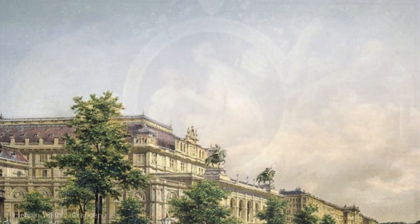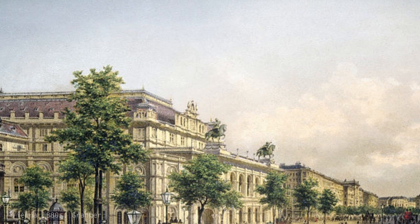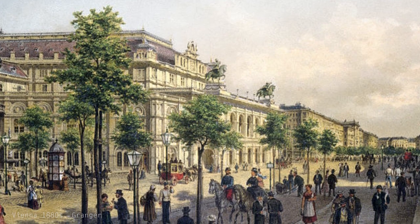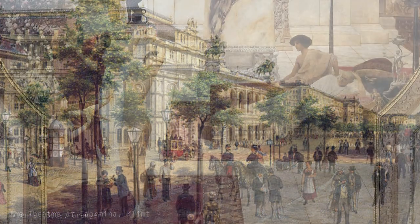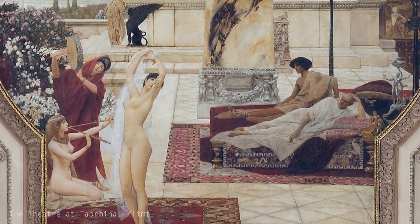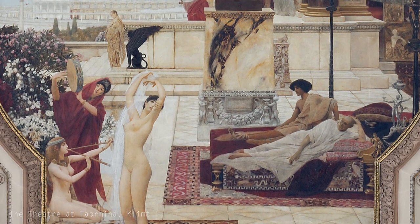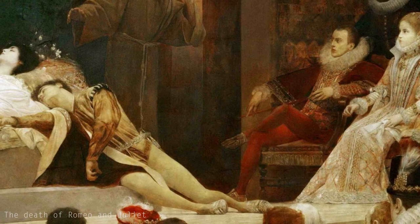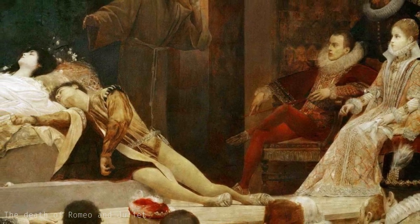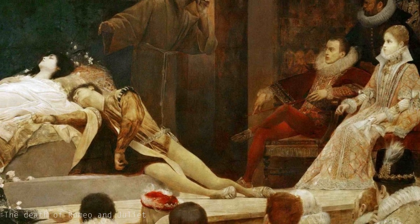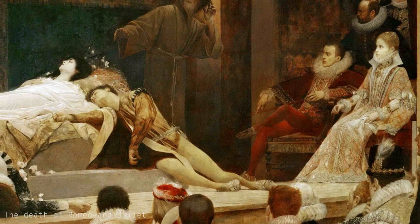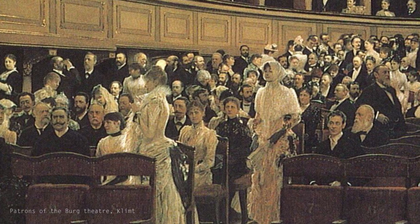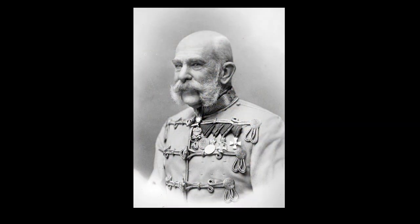Upon graduating in 1883, Klimt found there was no shortage of work for him. The city was in the process of remodelling as it modernised, and many of its newly renovated cultural buildings were in need of murals for their walls. The most famous of these early commissions is the works Klimt created alongside Ernst and their compatriot Franz Macht for the Burgtheatre, which depicts scenes from famous plays and the history of theatre. The murals were very well received and the trio of young painters were even awarded the golden cross for their achievement by then emperor and human walrus hybrid Franz Joseph.